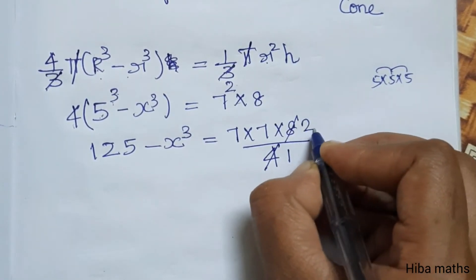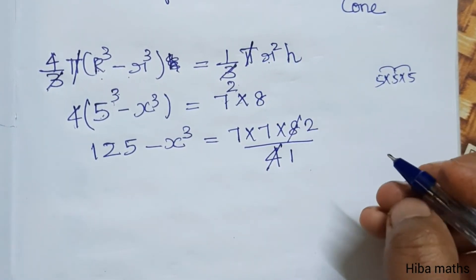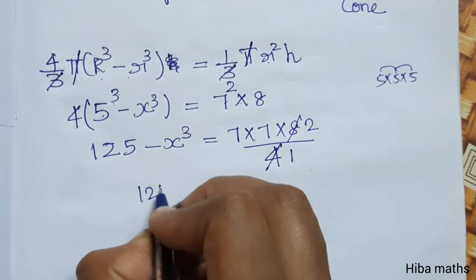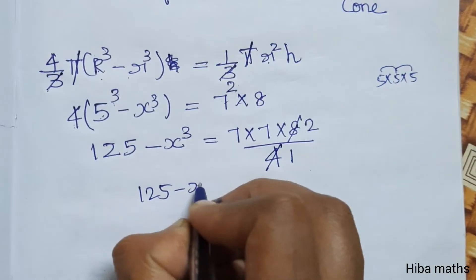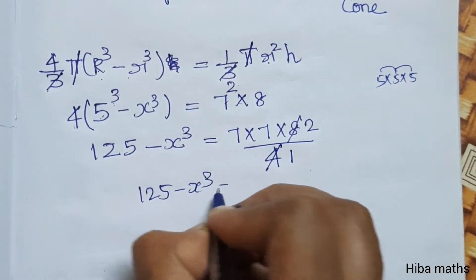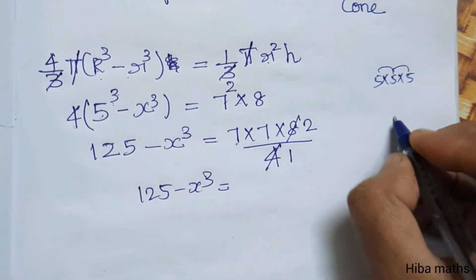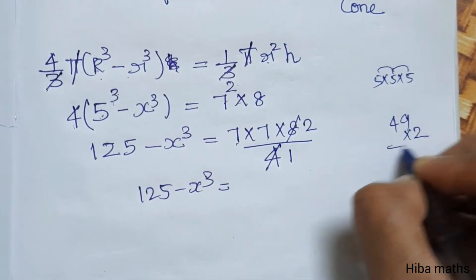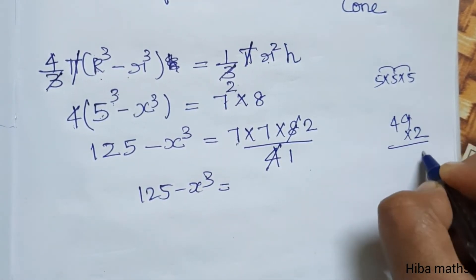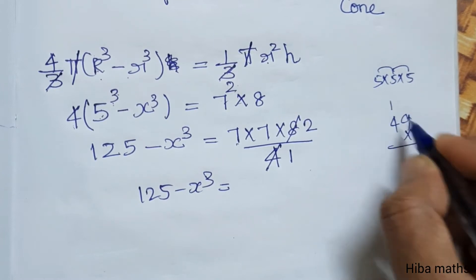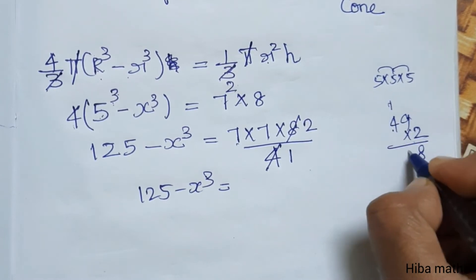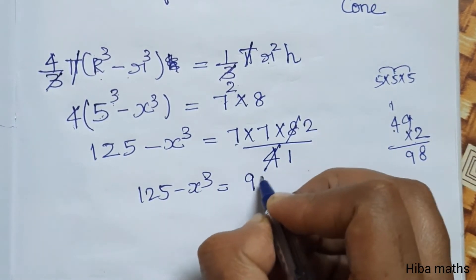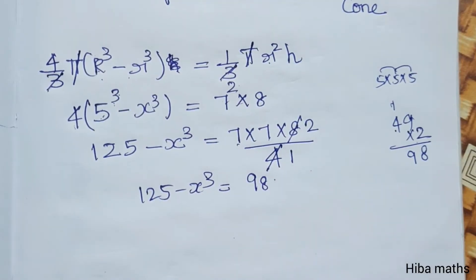Calculating: 5³ equals 125. On the right side, 7² is 49, times 8 is 392, divided by 4 gives 98. So 125 minus x³ equals 98.